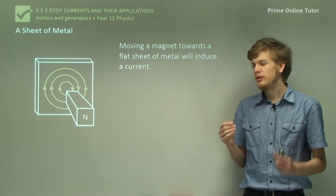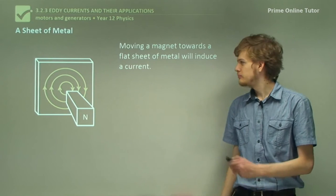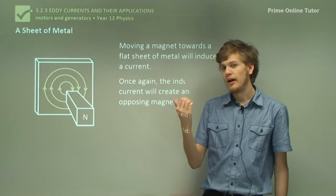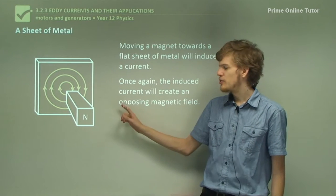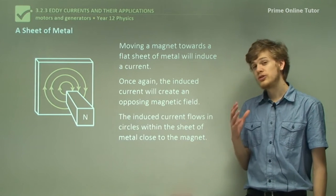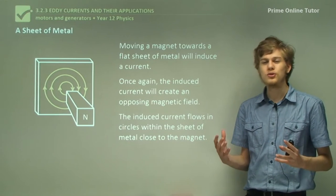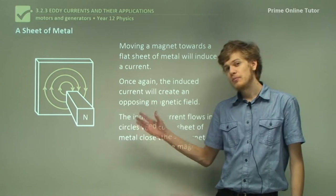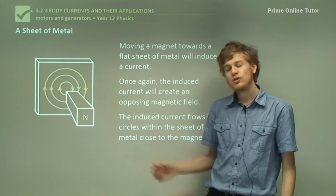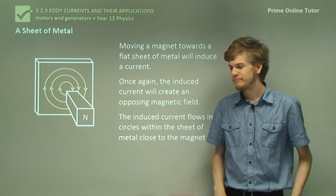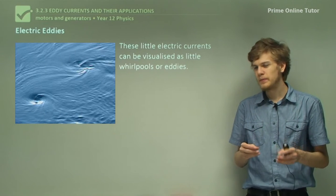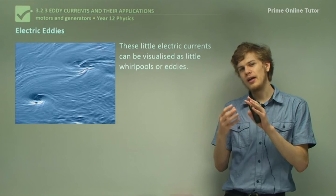Moving a magnet toward a flat sheet of metal will induce a current all through that sheet of metal. Once again, it'll create an opposing magnetic field. We can see that each one of these little eddy currents will produce a south pole facing the magnet, which means that this magnet must be approaching the sheet of metal. So the induced current will flow in circles within the sheet of metal, or within the block of metal if we use something more thick. By moving a magnet, we can get hundreds of these little tiny currents flowing in a clockwise direction, and they don't all have to be concentric either. These little electric currents can be thought of as whirlpools or eddies or vortices existing right at the top of the sheet of metal.